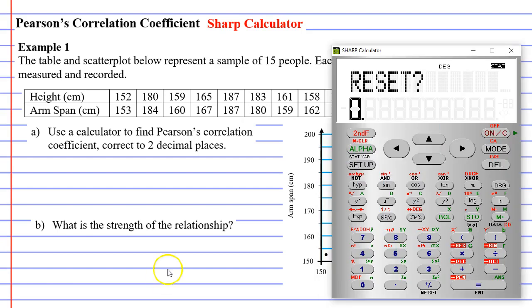So in this particular video we're going to use a Sharp calculator and before we get started we need to reset the calculator. To do that we're going to go second function alpha, reset is number 1 and then we're going to press equals. The reason we need to do that is whenever you put statistics into a calculator you need to reset it in case other statistics have already been put in there.